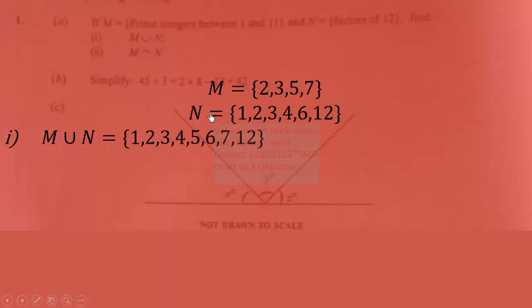Part ii: M intersection N. So M intersection N are elements that are common to both sets. As we can see, there's 2 here and 2 here, there's 3 here and 3 here. We don't have any other elements that are common. Therefore, M intersection N is {2, 3}.